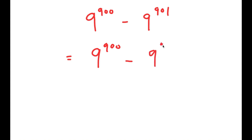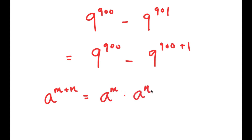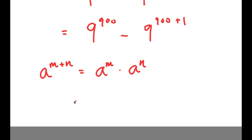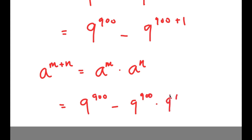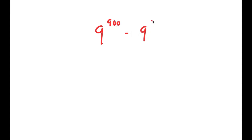I'm going to rewrite 9 to the power of 901 as 9 to the power of 900 plus 1, and now I can use the exponential property a to the power of m plus n equals a to the power of m times a to the power of n. So I get 9 to the power of 900 minus 9 to the power of 900 times 9 to the power of 1.